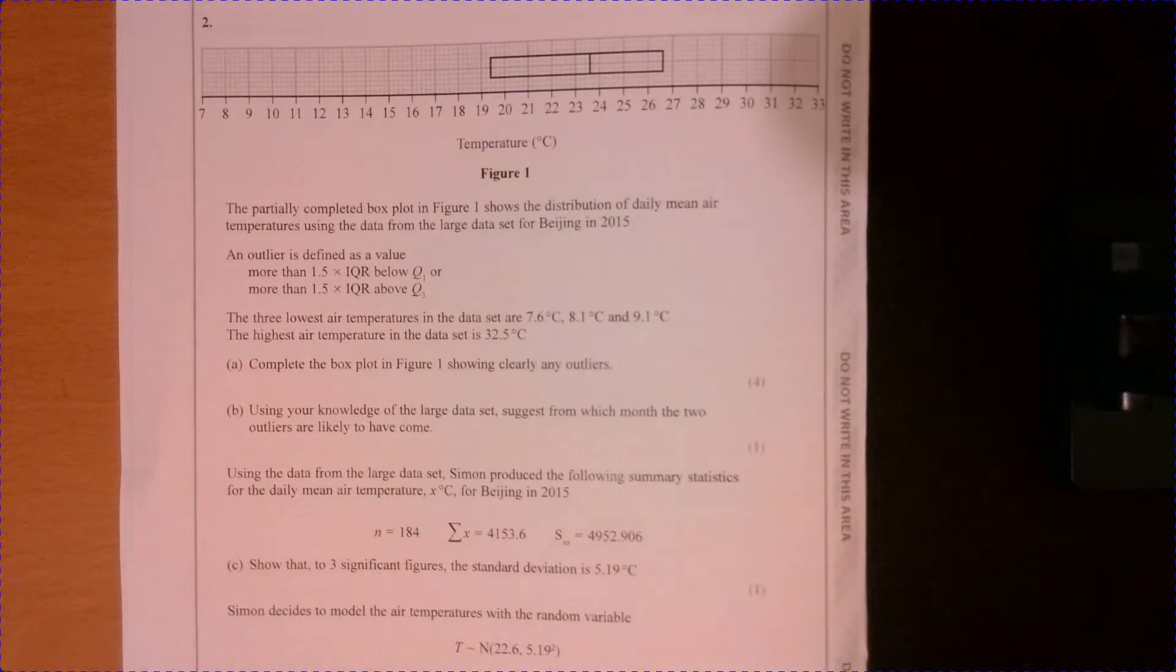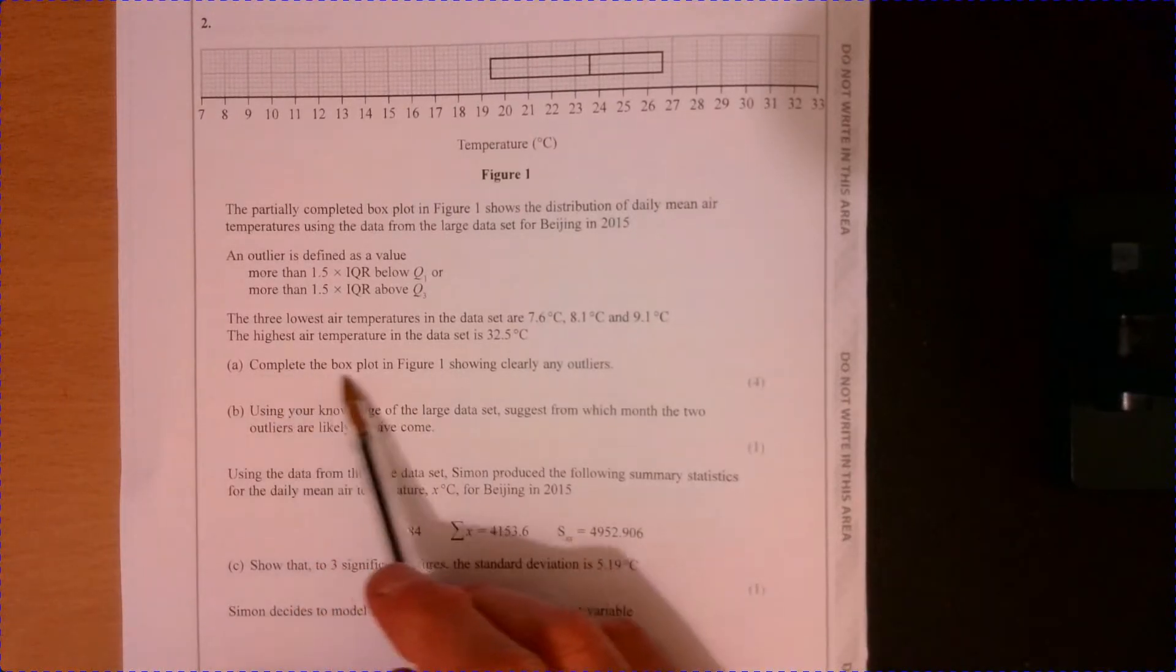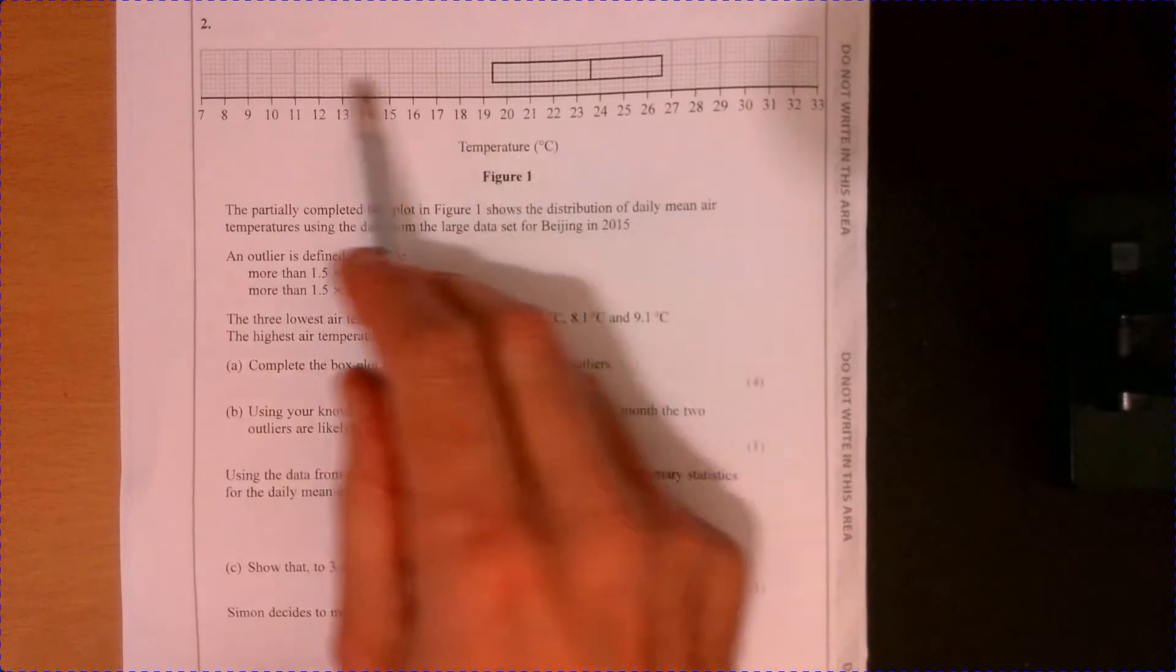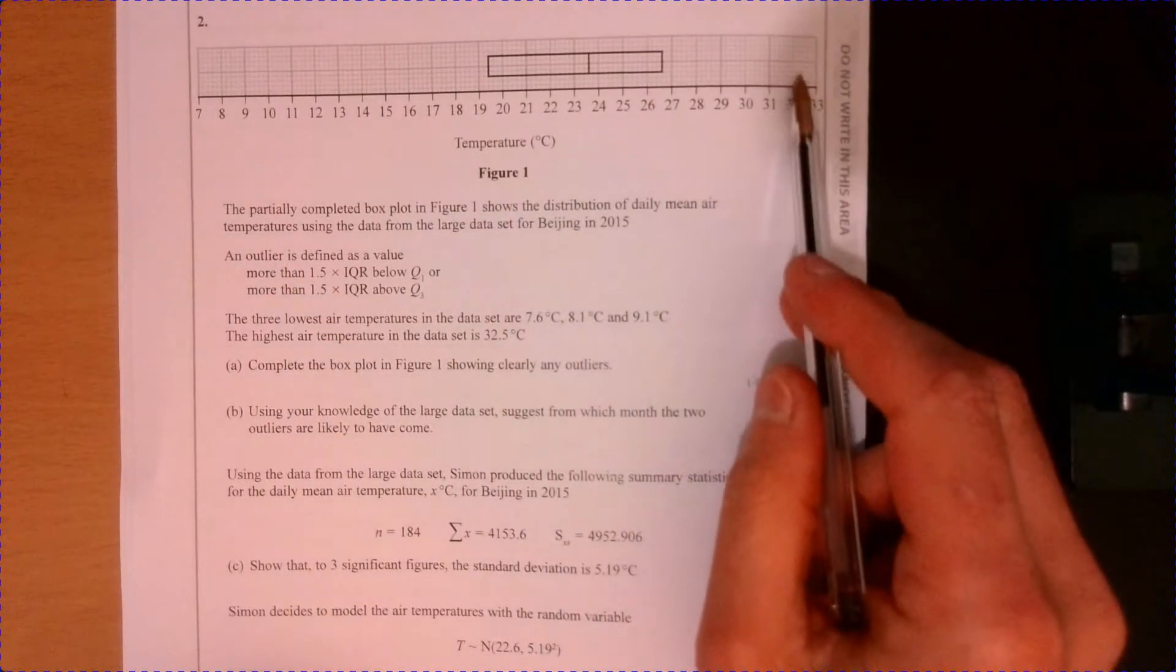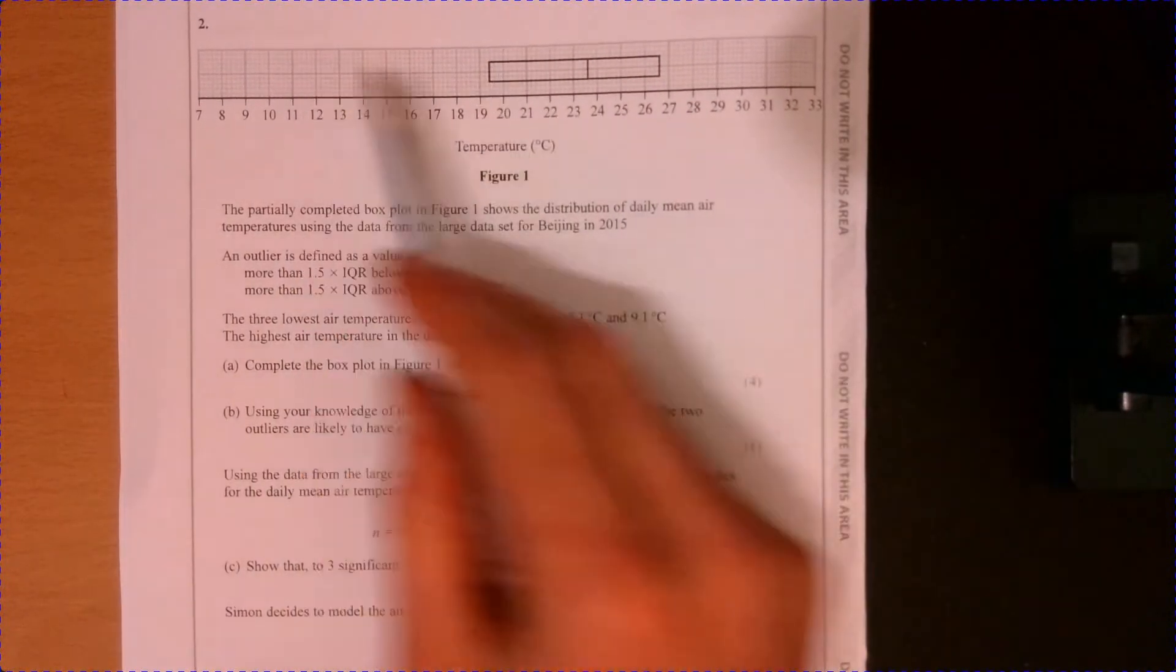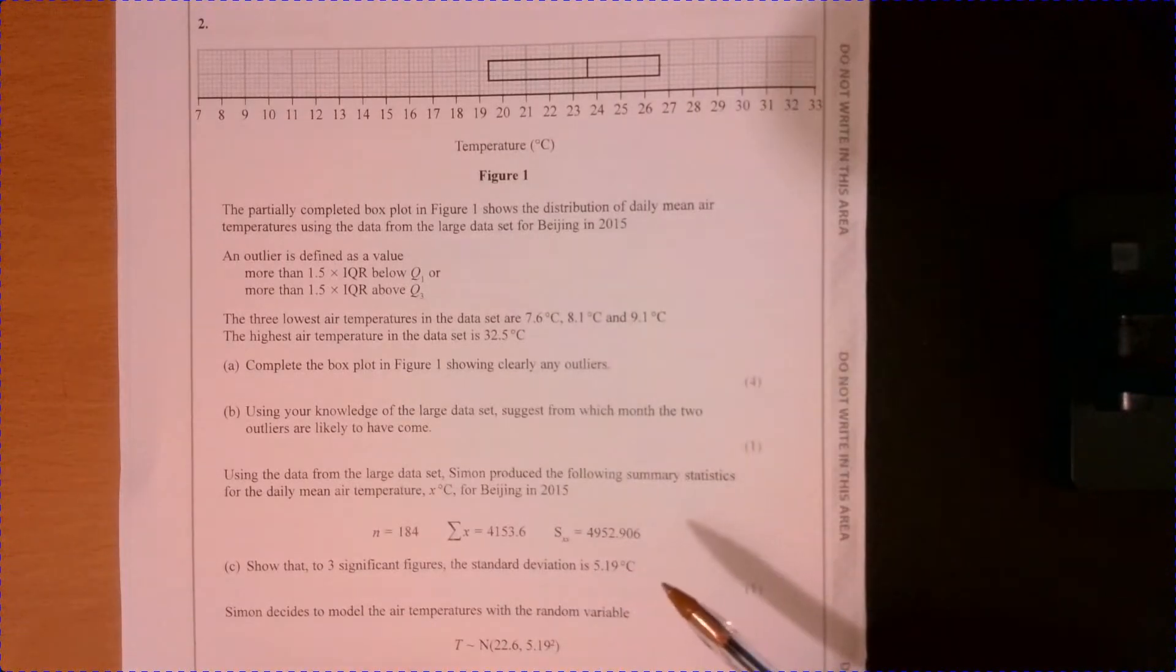So question two. We need to complete the box plot up here. And obviously we haven't got the whiskers. I don't know what the lowest value is and the highest value are.